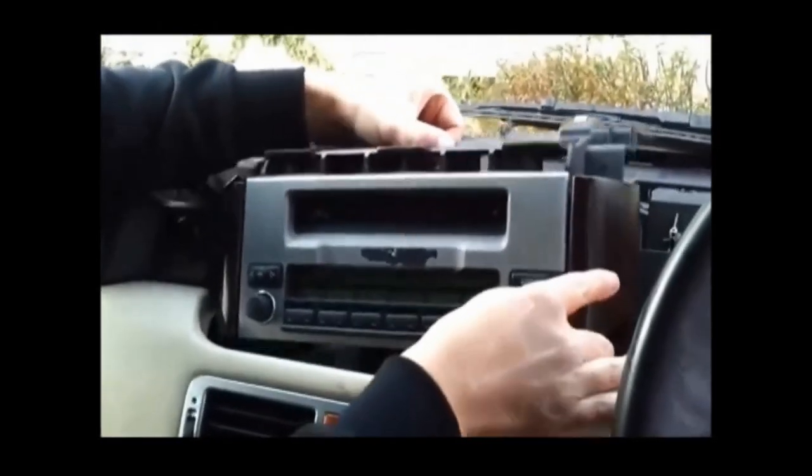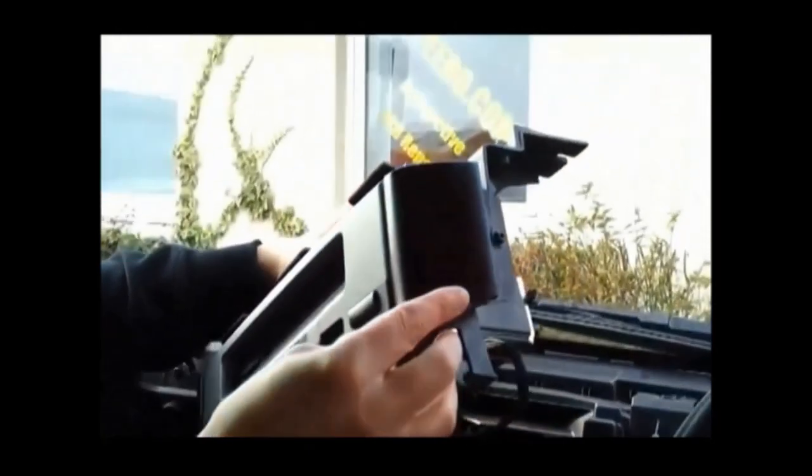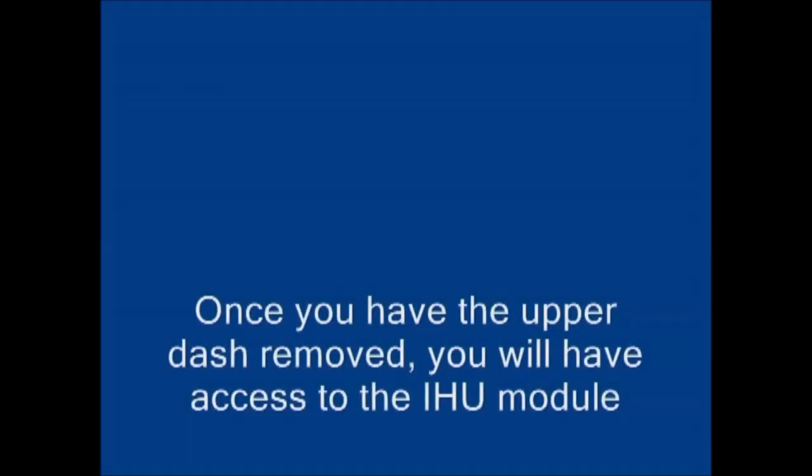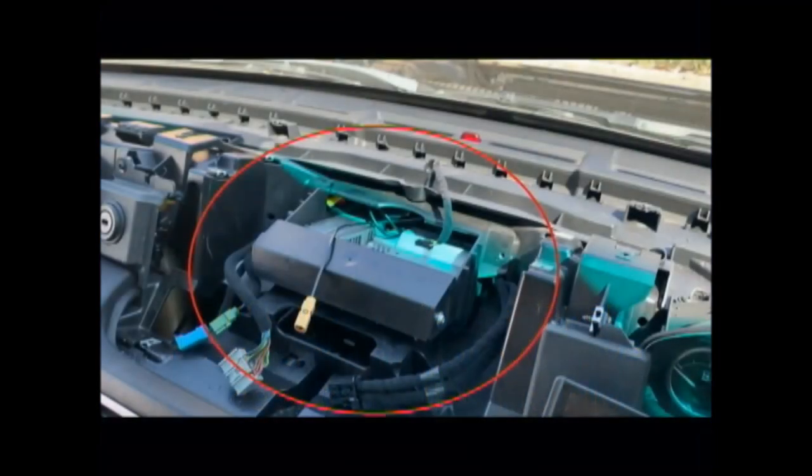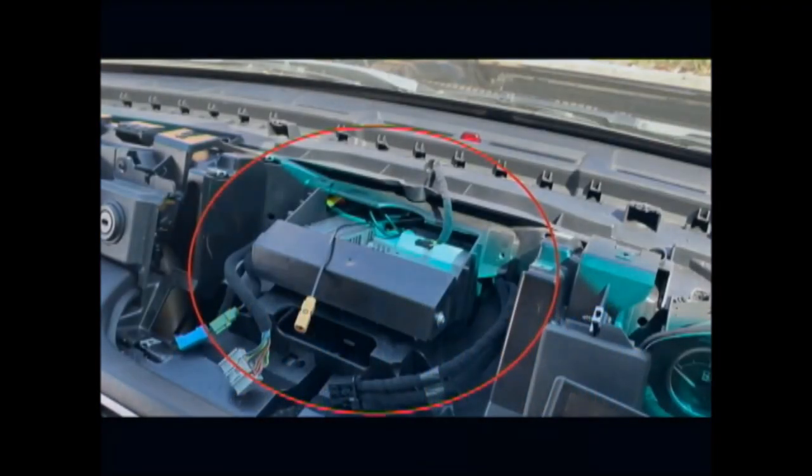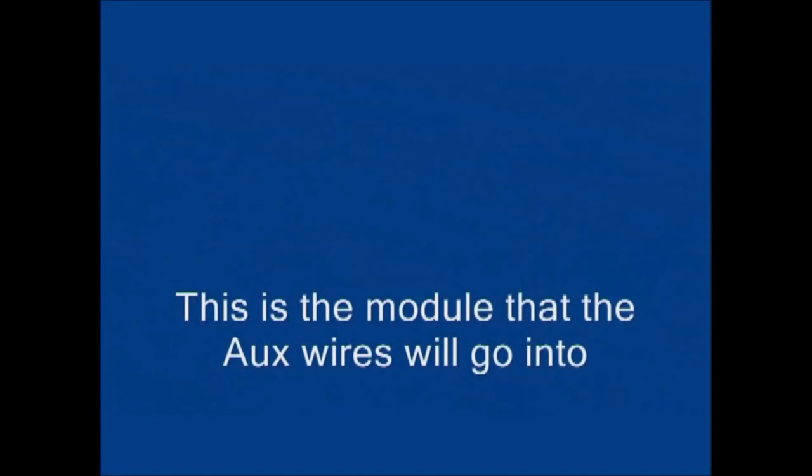And then once the six screws are out you can pull the stereo fascia up and get to the wires at the back. So unplug them wires so you can get the touchscreen out of the way and then it reveals the IHU, the radio module at the back. That's the module that the AUX wires are going to go into.